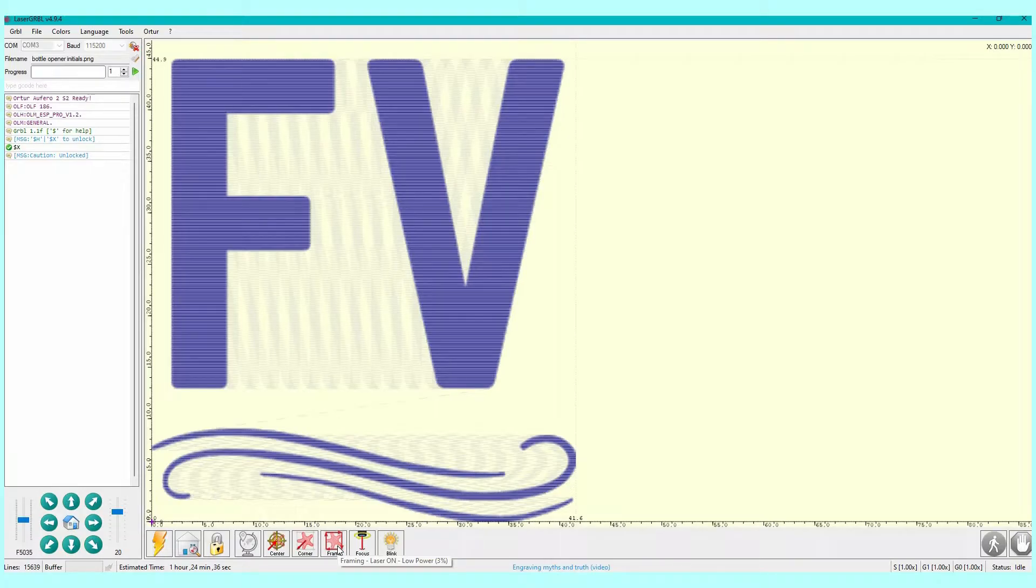Now you connect the laser by clicking the little connect button up in the top left and then down on the bottom, you want to hit the unlock button. If you are new to this laser, be sure to check out my intro video and you can see all of these steps right from the beginning.